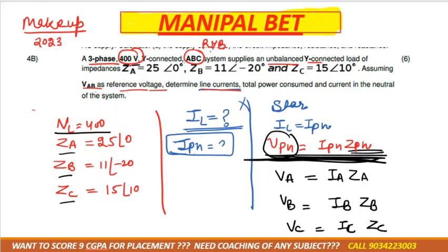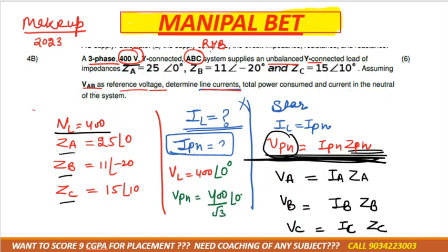The line voltage VL = 400V at 0°. So the phase voltage VpH = VL / √3 = 400 / √3 ≈ 232 volts.